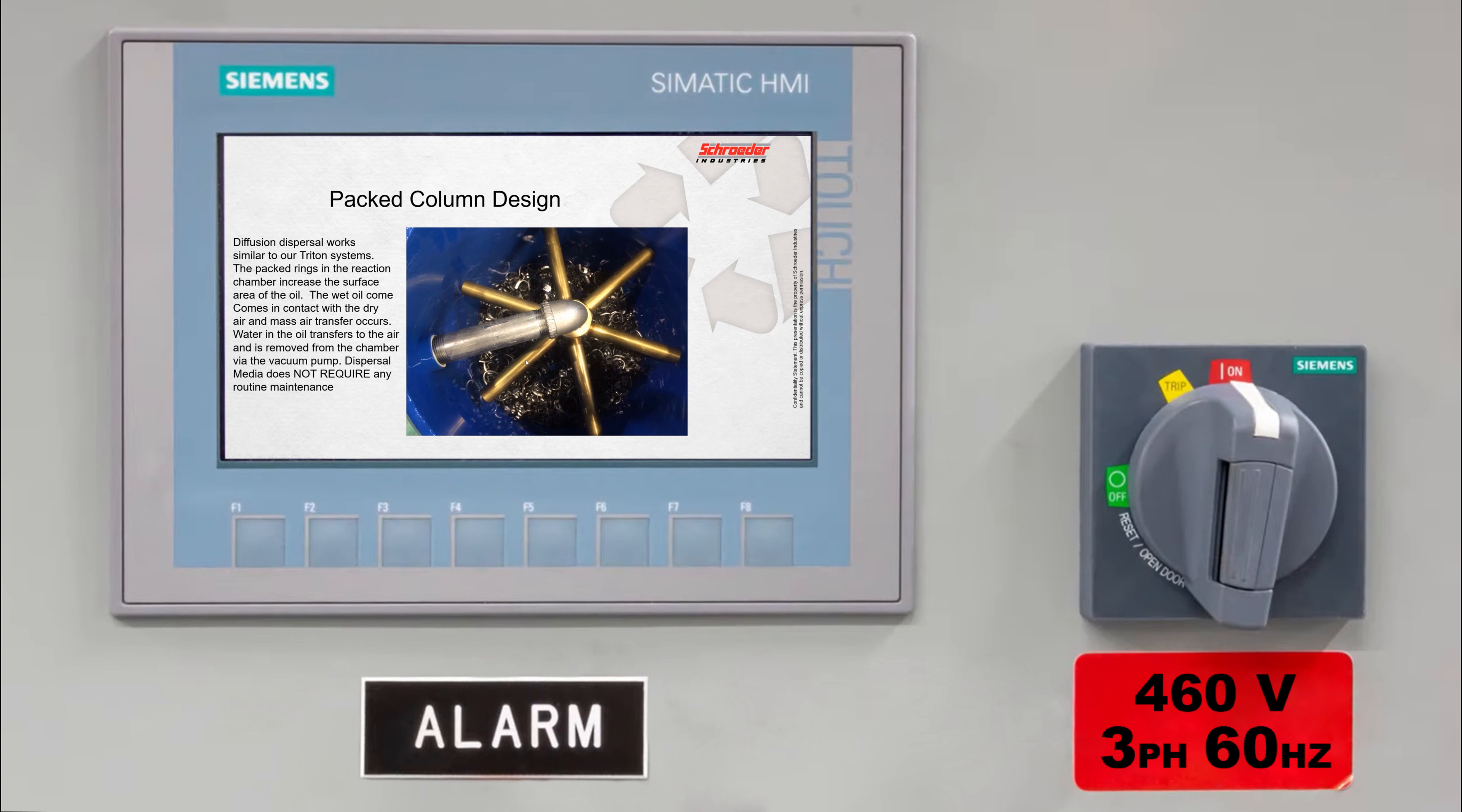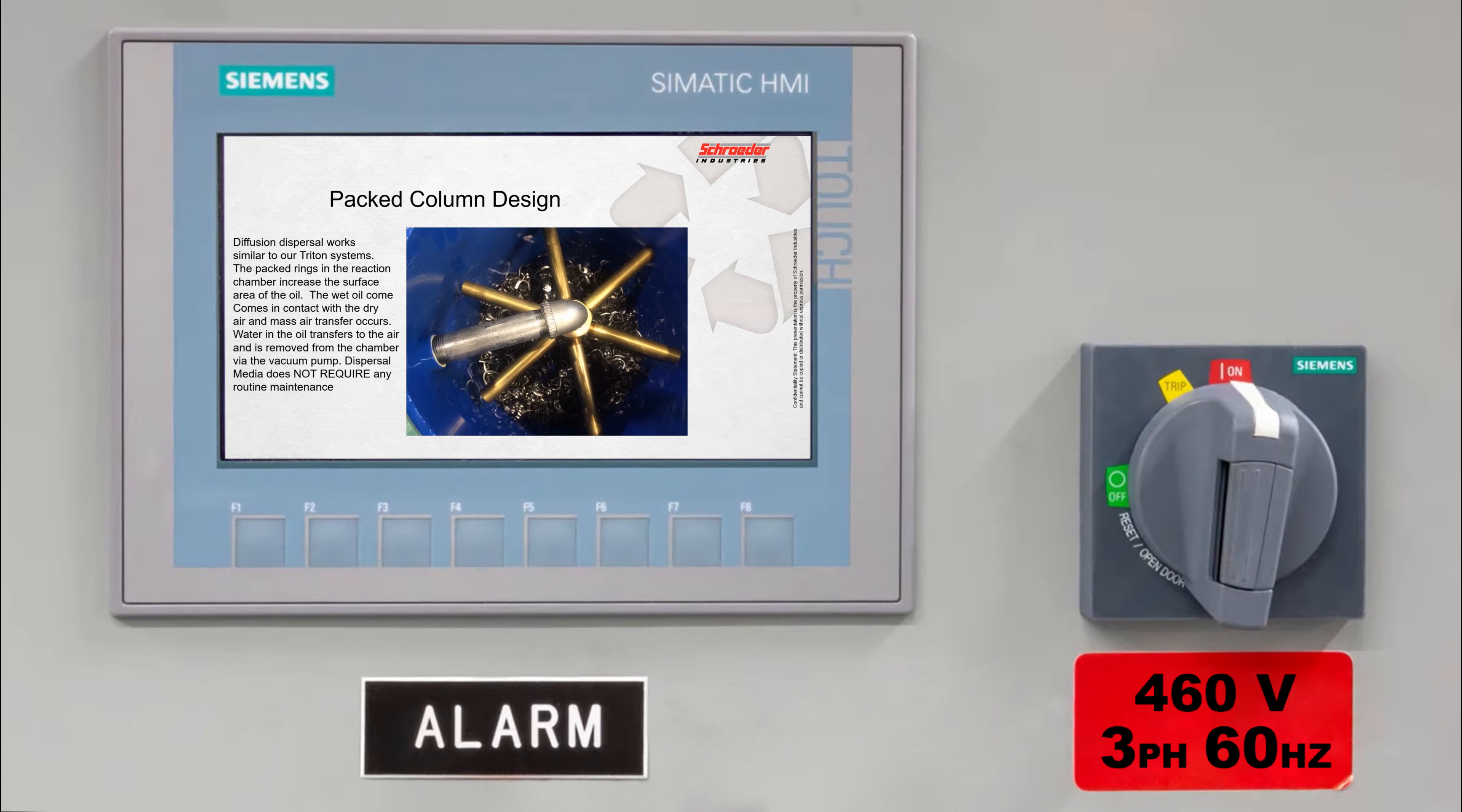Now a lot of strengths come up with the mass transfer diffusion method. We're going to remove free dissolved water gases, get it much below the saturation point. We can also drop it into single digits. A viscosity range up to 700 centistokes, very low maintenance on it. The vacuum pump only requires an annual oil change based upon about 7,000 hours, and then you have your intake breather and your particulate elements, but that's really your maintenance that's used on this. It's very efficient at a lower heat, low vacuum, has a high uptime reliability, ease of use and performance.